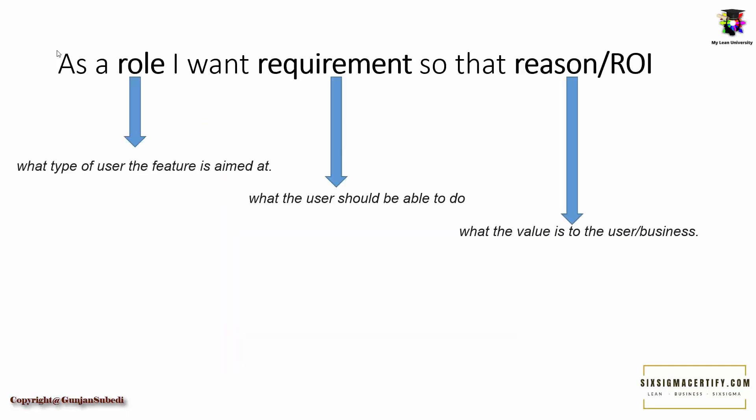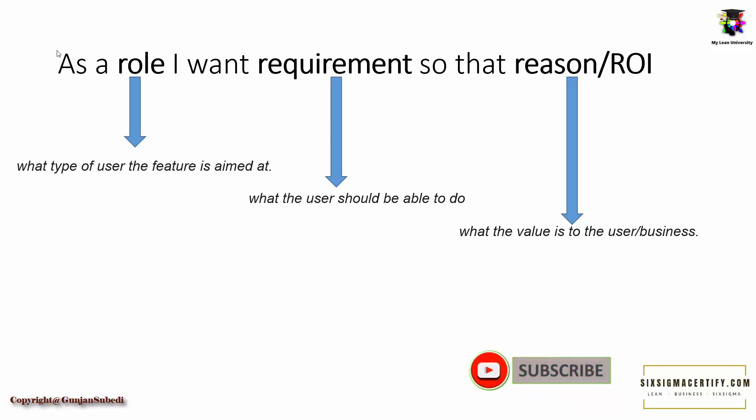The 3R approach consists of the roles, requirements, and reason — all in a single statement. The roles explain what type of user the feature is aimed at. The requirement gives us information about what the user should be able to do, and the reason tells us what the value is to the user or the business.